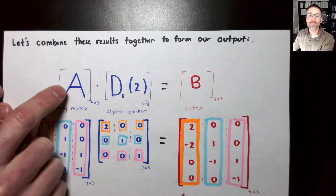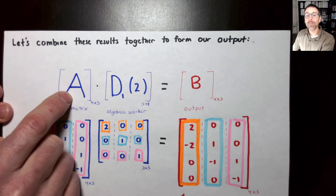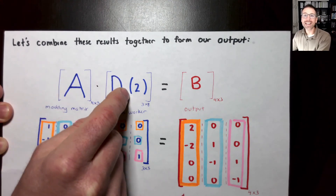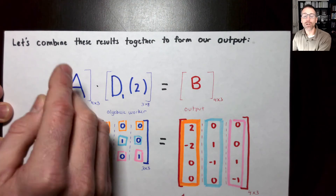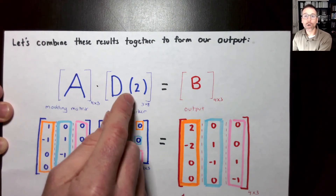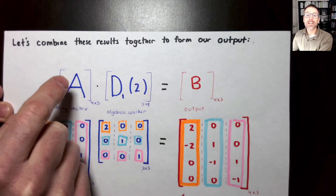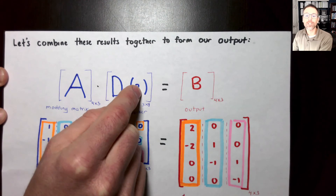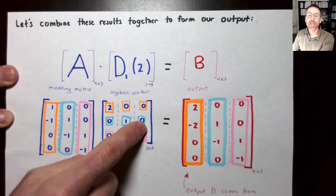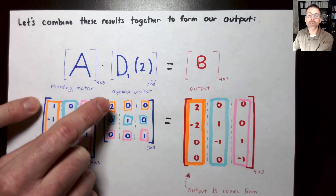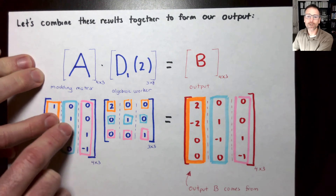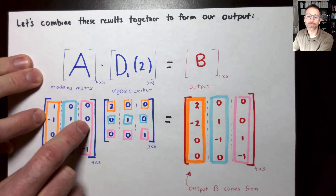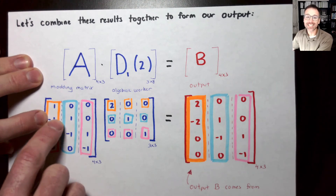Let's combine all the results. We have matrix A from a modeling context; we wanted to double the first column and leave the others untouched. Because we're manipulating columns, we multiply on the right and think about linear combinations of those columns — we chop A, the algebraic worker, and the output all into columns. To double column 1, we use dilation matrix D1,2. For column 1 of the output: 2 times column 1, 0 times column 2, 0 times column 3 — we've doubled column 1 with no contributions from the others.